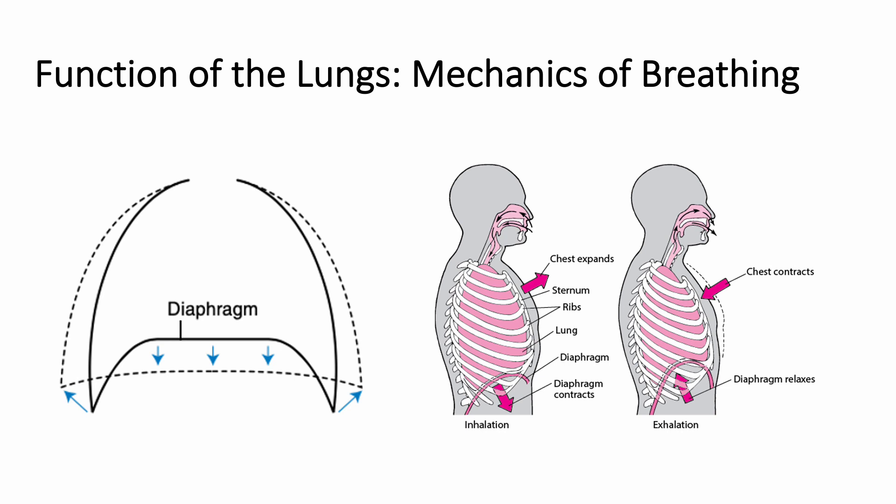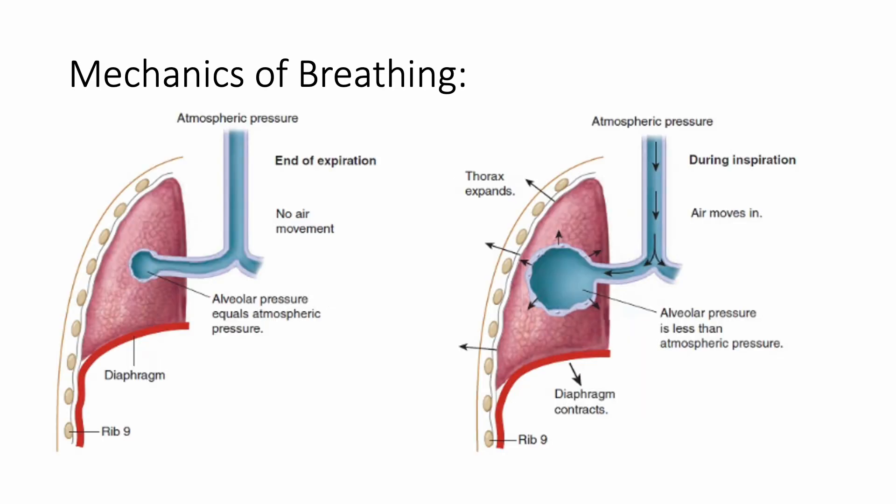To briefly review the mechanics of breathing, during inspiration, the diaphragm and muscles of the chest wall contract, resulting in chest wall expansion and expansion of the thorax as seen here. Because the intrapleural space, that is the space between the inner lining of the chest wall and the outer portion of the lung, has a negative pressure, the lungs themselves stretch and expand, mirroring the new shape of the expanded thoracic cavity. As the lung expands, the parenchyma is pulled and stretched, resulting in an increase in the volume of the alveoli within the lungs, which are the functional units of the lungs.